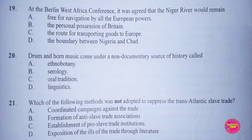Question 19. At the Berlin West Africa Conference, it was agreed that the Niger River would remain: A. Free for navigation by all European powers, B. The personal possession of Britain, C. The route for transporting goods to Europe, D. The boundary between Nigeria and Chad. The correct answer to this question is A. Free for navigation by all European powers.